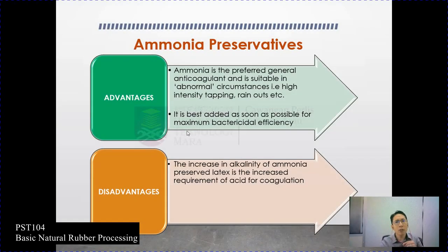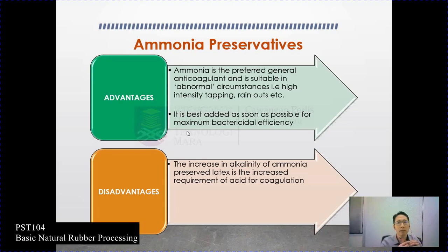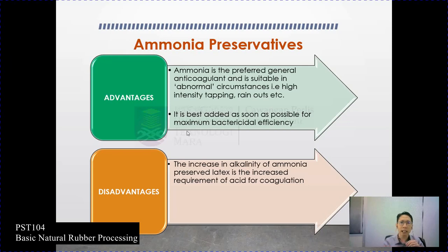The advantages and disadvantages of ammonia: the first advantage is that ammonia is the preferred general anticoagulant and is suitable in abnormal circumstances such as high intensity tapping, rain, and so on. It is best added as soon as possible for maximum bactericidal efficiency. 'Abnormal circumstances' refers to situations like light rain falling during tapping — when other types of preservatives would have reduced efficiency, but not ammonia.